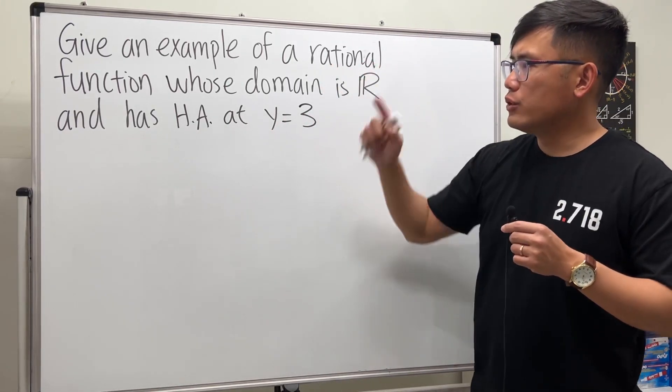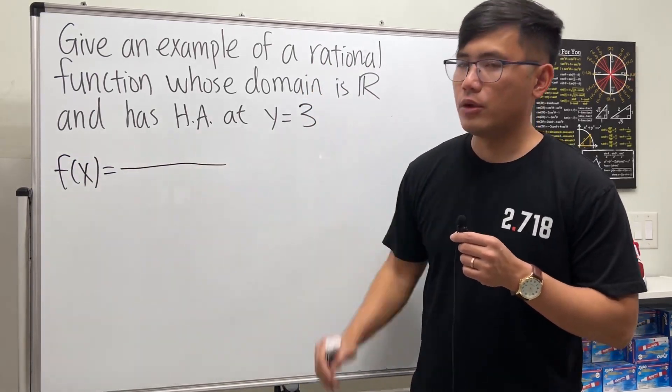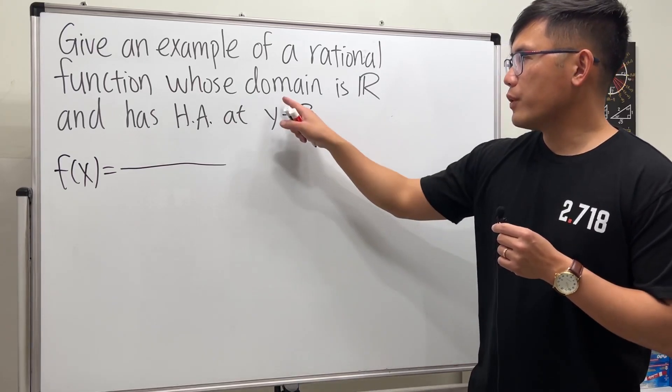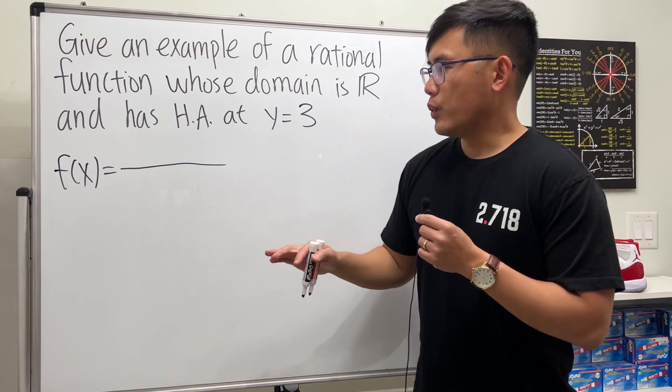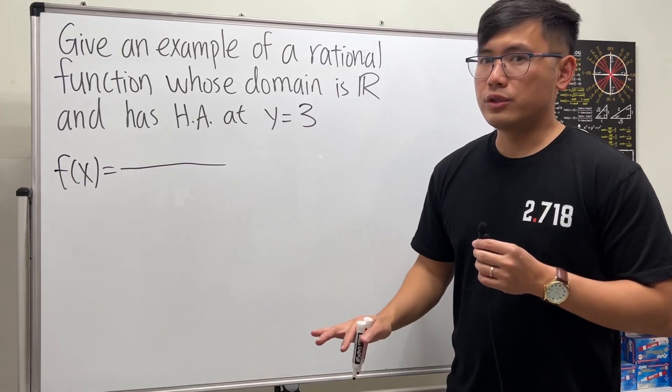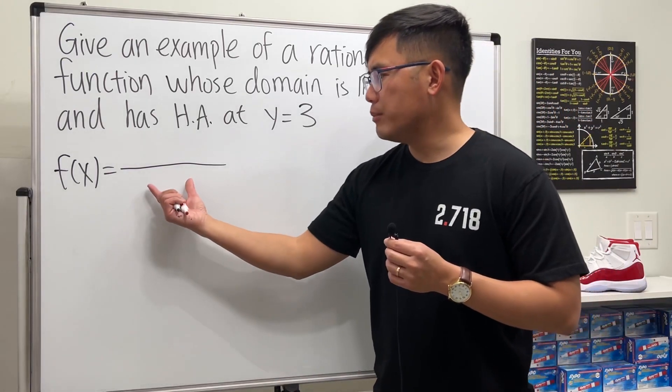When we have a rational function, the form is we must have a polynomial over a polynomial. In order for the domain to be the set of all real numbers, that means we are not going to have any restrictions, so x can be any real number.